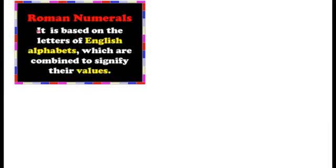Next, MMM — the value of M is 1000, written three times, so 1000 plus 1000 plus 1000 equals 3000. And CC — C is written twice, the value of C is 100, so 100 plus 100 equals 200.